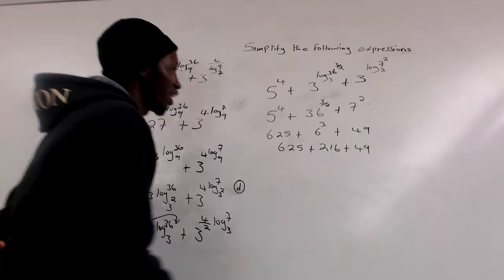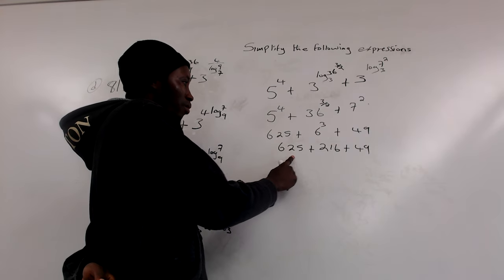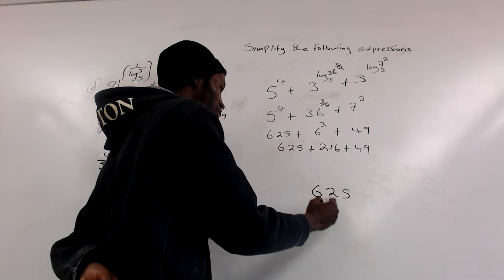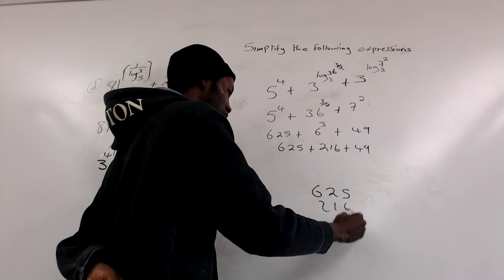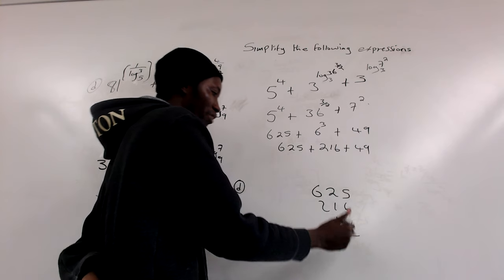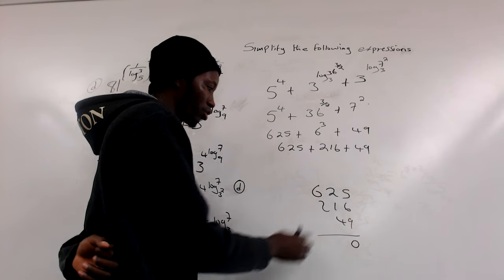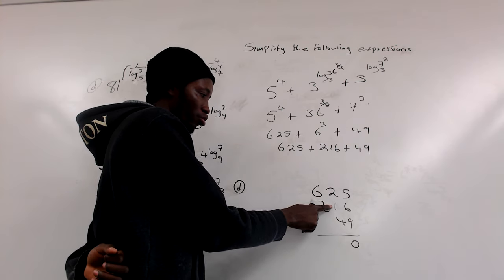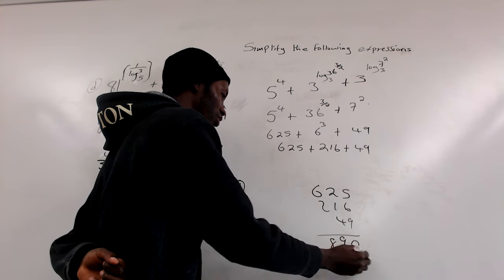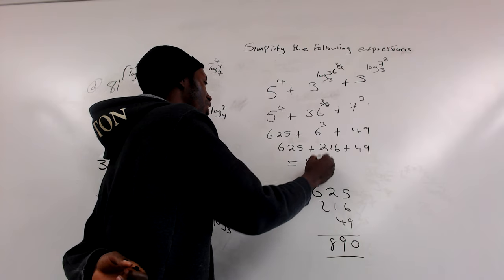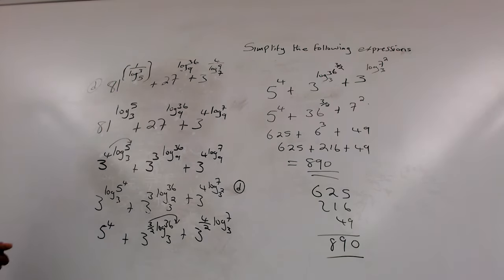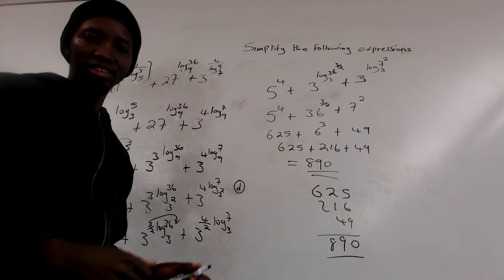Adding the three results: 625 plus 216 plus 49. Working through: 5 + 6 is 11 carry 1, giving 0; 2 + 4 + 1 is 7; and 6 + 2 is 8. So the final answer is 890. The final answer for this logarithm problem is 890. Thank you all and stay blessed.